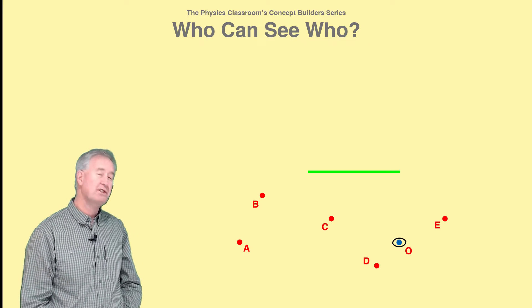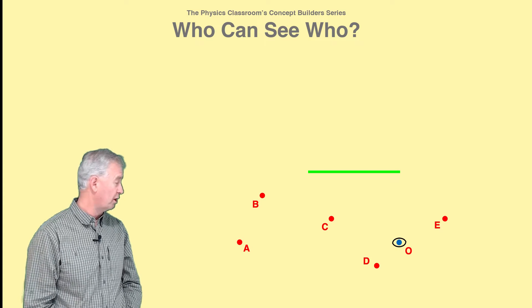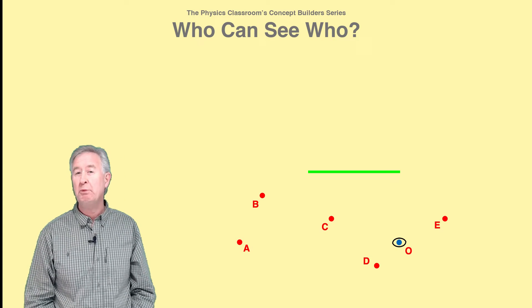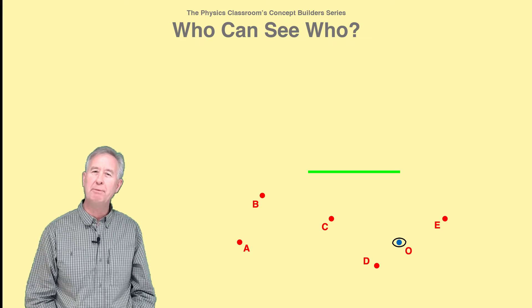Suppose there are five students sitting in front of a plain mirror, and an observer marked O on the diagram. How can we predict which students this observer will see when looking in the mirror?